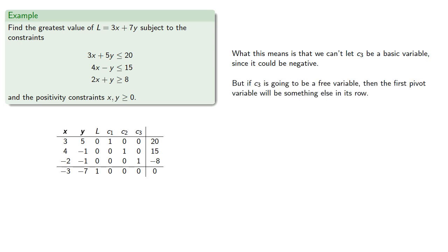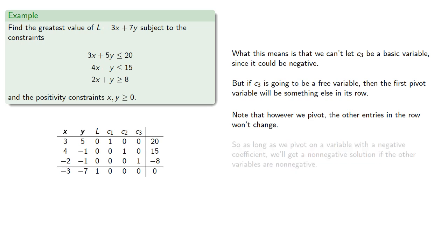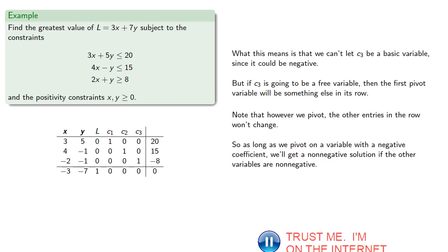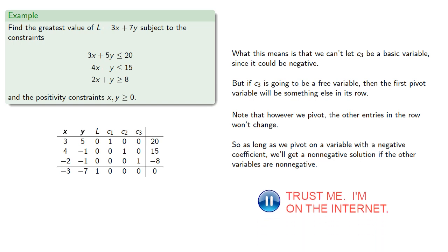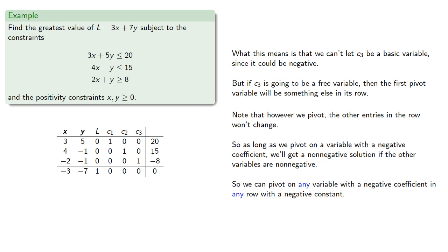But if c3 is going to be a free variable, then the first pivot variable will have to be something else in its row. Now, note that however we pivot, the other entries in the row won't change. So as long as we pivot on a variable with a negative coefficient, we'll get a non-negative solution if the other variables are non-negative. So we can pivot on any variable with a negative coefficient in any row with a negative constant.